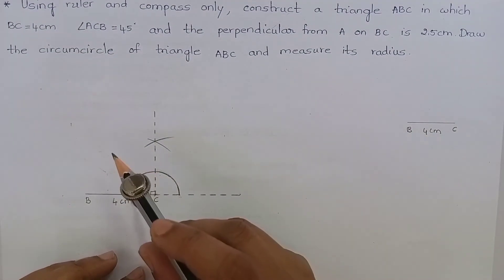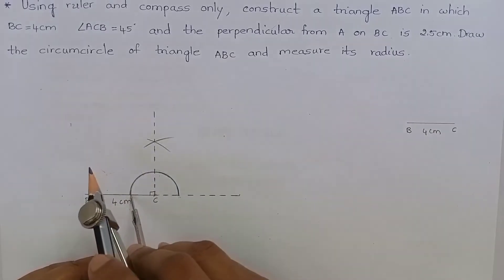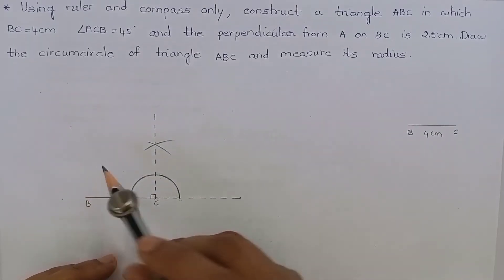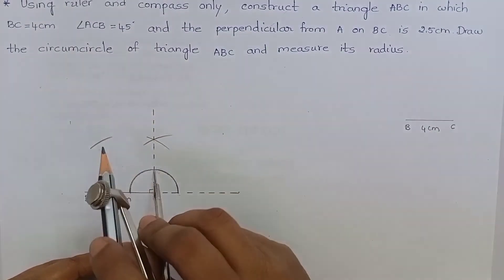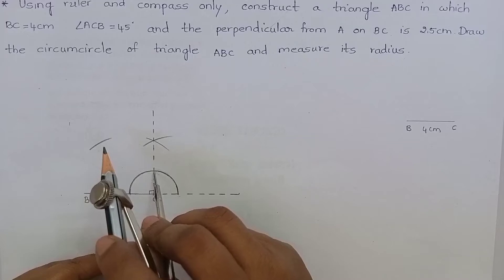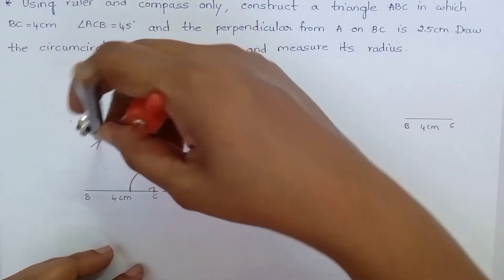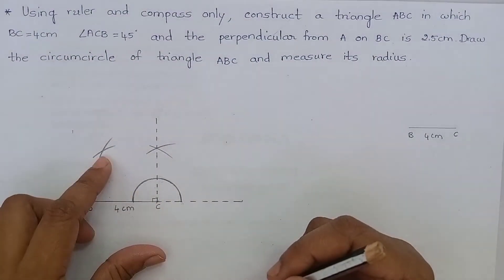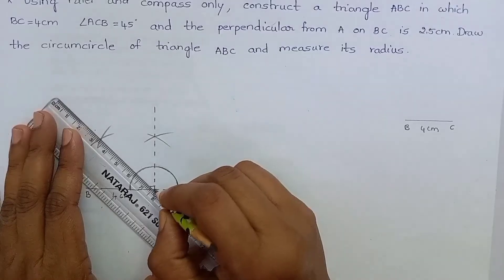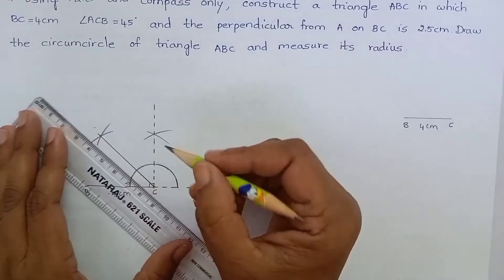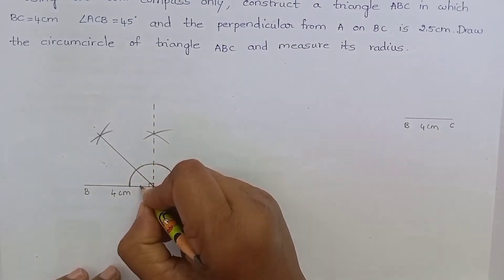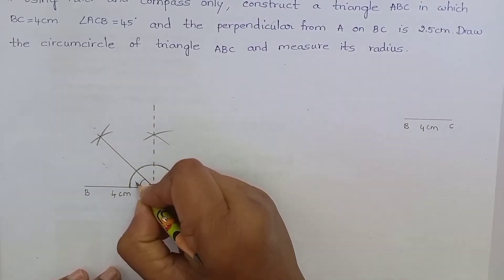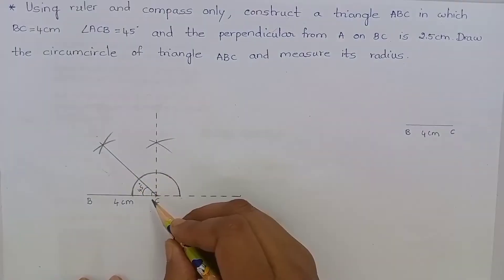To do this, keep the compass at this point and cut an arc. Keep the compass at this point and cut an arc. And join this. Here, this is 45 degrees. We have constructed 45 degrees at the point C.